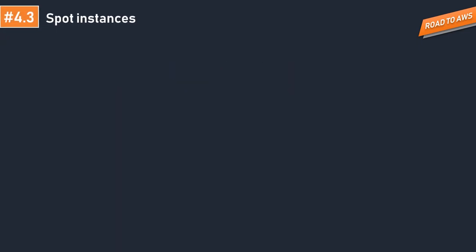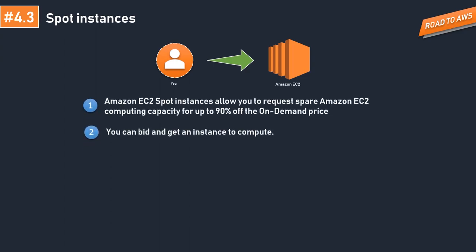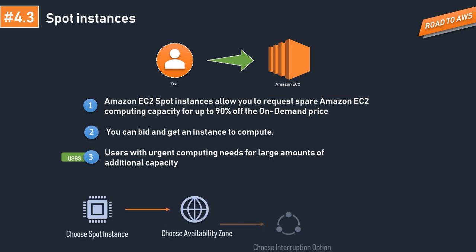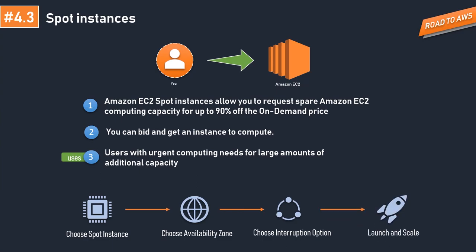The next pricing model is the spot instance. If you're ready for some risk and are processing data that doesn't depend on consistent instance availability, spot instances can be up to 90% cheaper than on-demand. A spot instance is an unused EC2 instance available for less than on-demand price — it's a per-hour bid. The hourly price is called the spot price. If your bid exceeds the spot price, you get to use it. Be careful with your data, as the instance may be interrupted at any point.